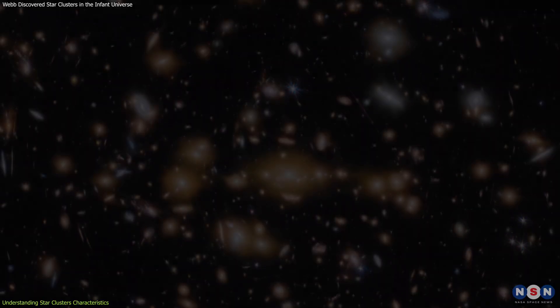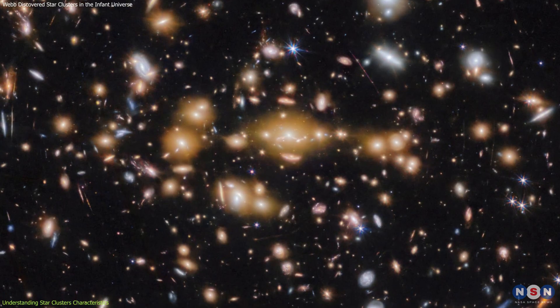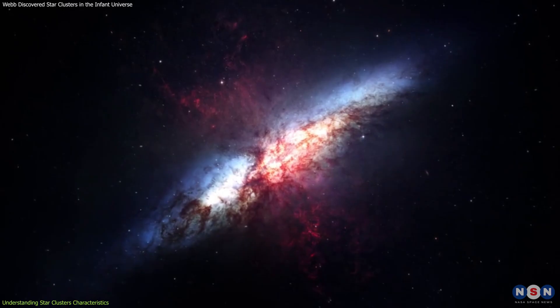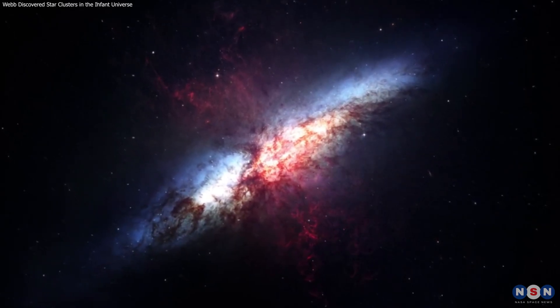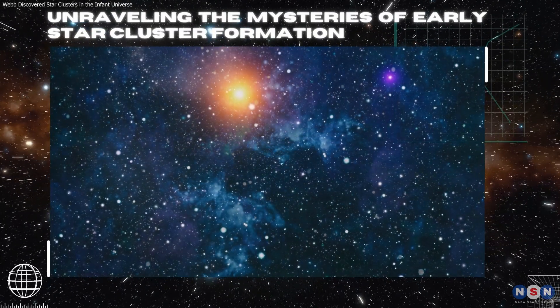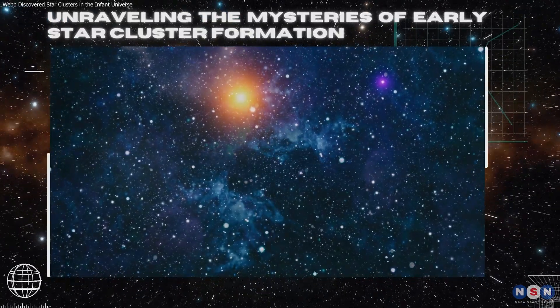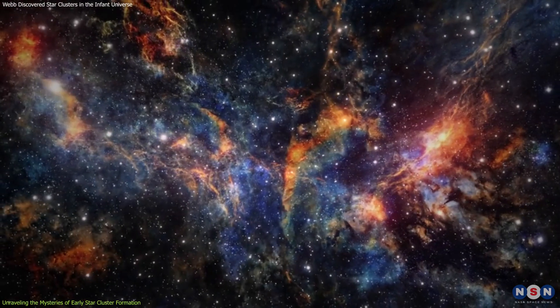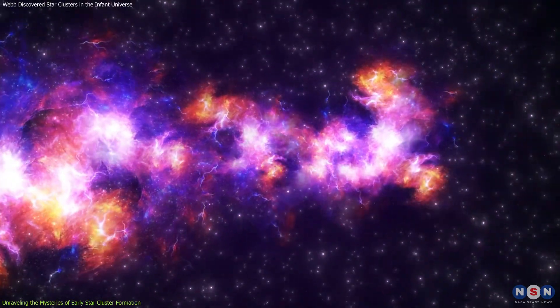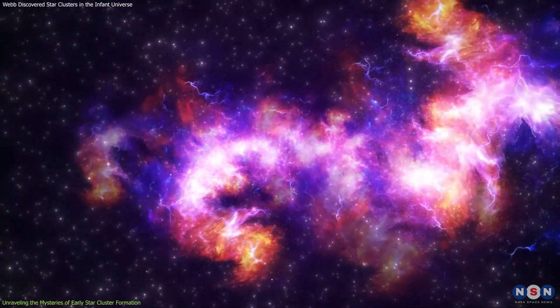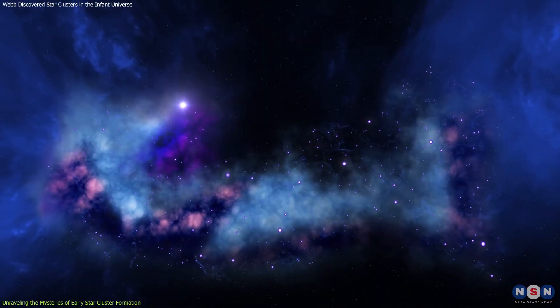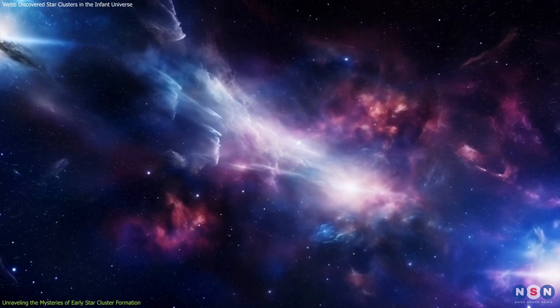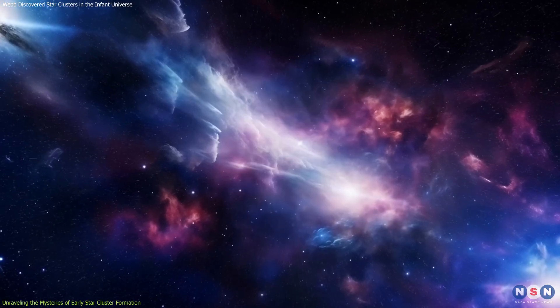Furthermore, by comparing these early clusters with the well-documented characteristics of open and globular clusters, astronomers can refine their models of stellar evolution and galactic formation. The high stellar densities suggest that these clusters formed in environments rich in gas and dust, under intense gravitational forces that are not commonly observed in the current epoch of the universe. This setting could have facilitated the rapid formation of stars, contributing significantly to the luminosity and ionization needed to alter the cosmic fabric.